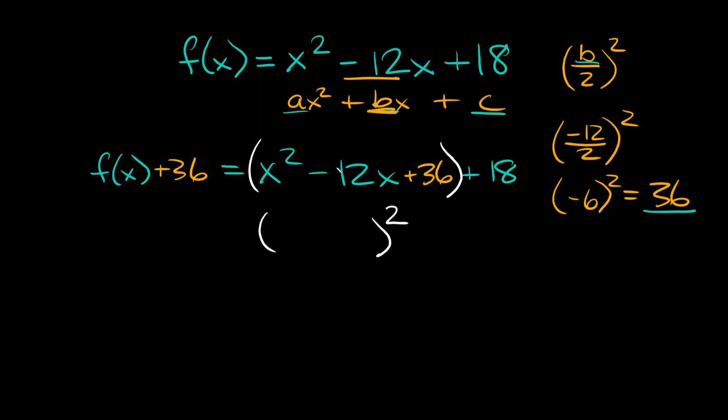What goes in here? First of all, whatever variable we're using goes right here, so we're using x. And then what goes here? You just take whatever number's here in the middle - negative 12 - and divide it by 2. Negative 12 divided by 2 equals negative 6, so we get (x - 6).